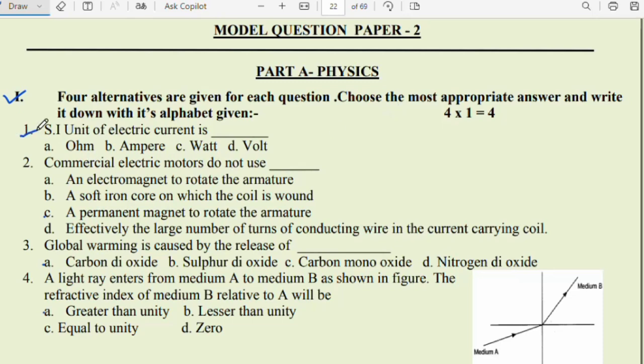First, multiple choice questions will be there children. Each question carries one mark. First question: SI unit of electric current is? The correct option is B, ampere is the right answer. Second question: commercial electric motors do not use a permanent magnet to rotate the armature. Third question: global warming is caused by the release of carbon dioxide.